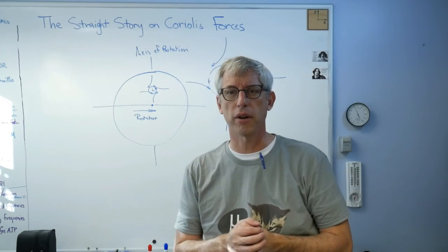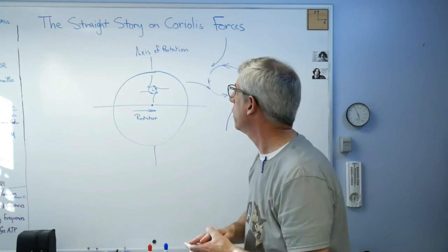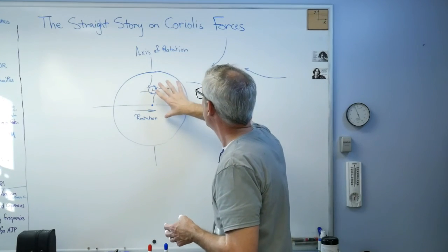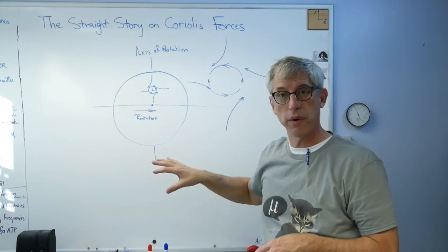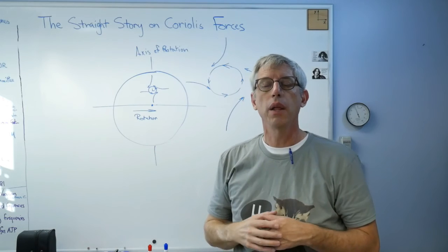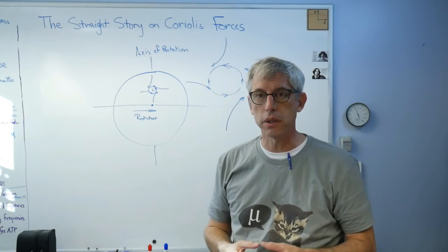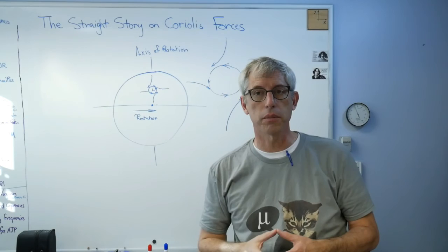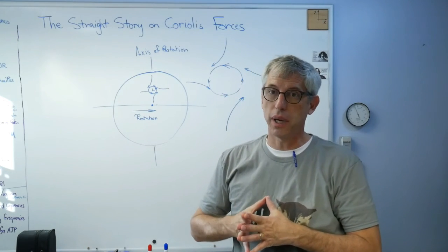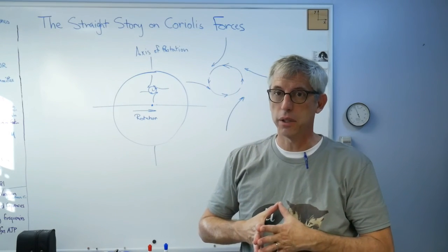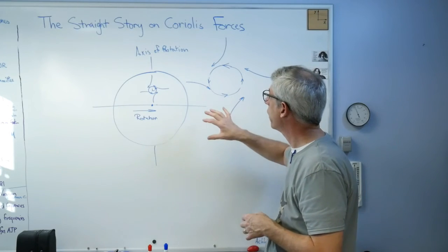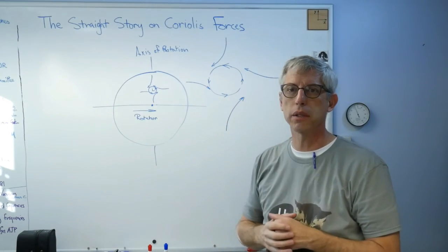So anyway, Coriolis forces happen when you've got motion on a spinning reference frame, a rotating reference frame. They happen only over very large distances. Over small distances they're negligible. On human-sized distances they're definitely negligible.